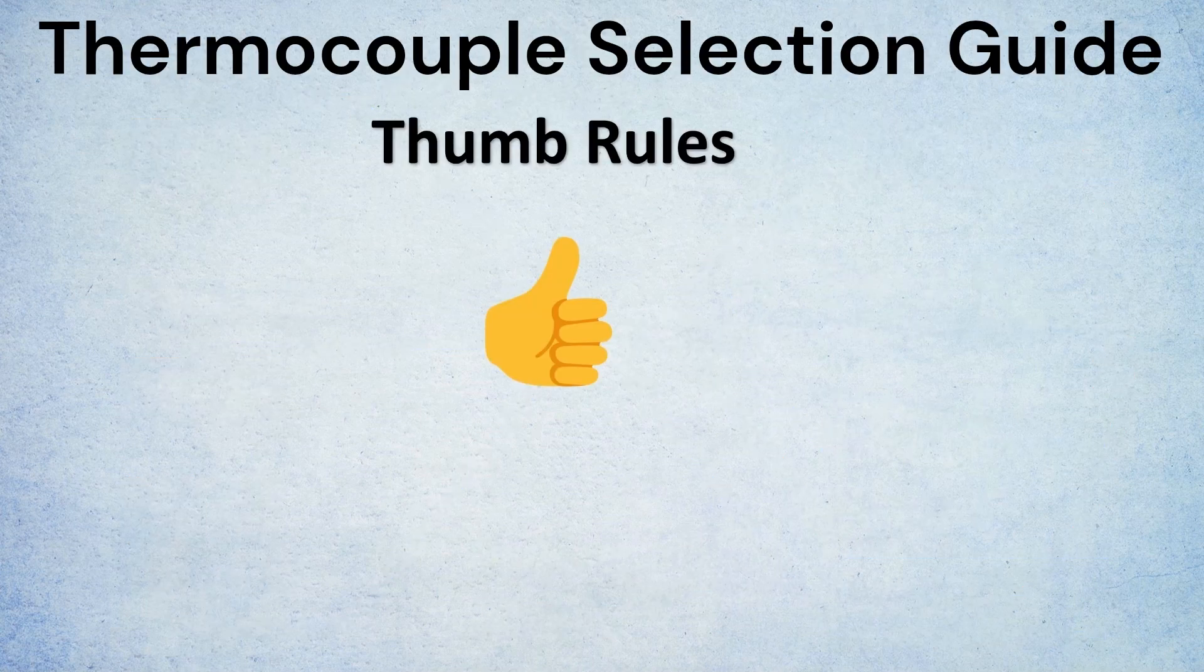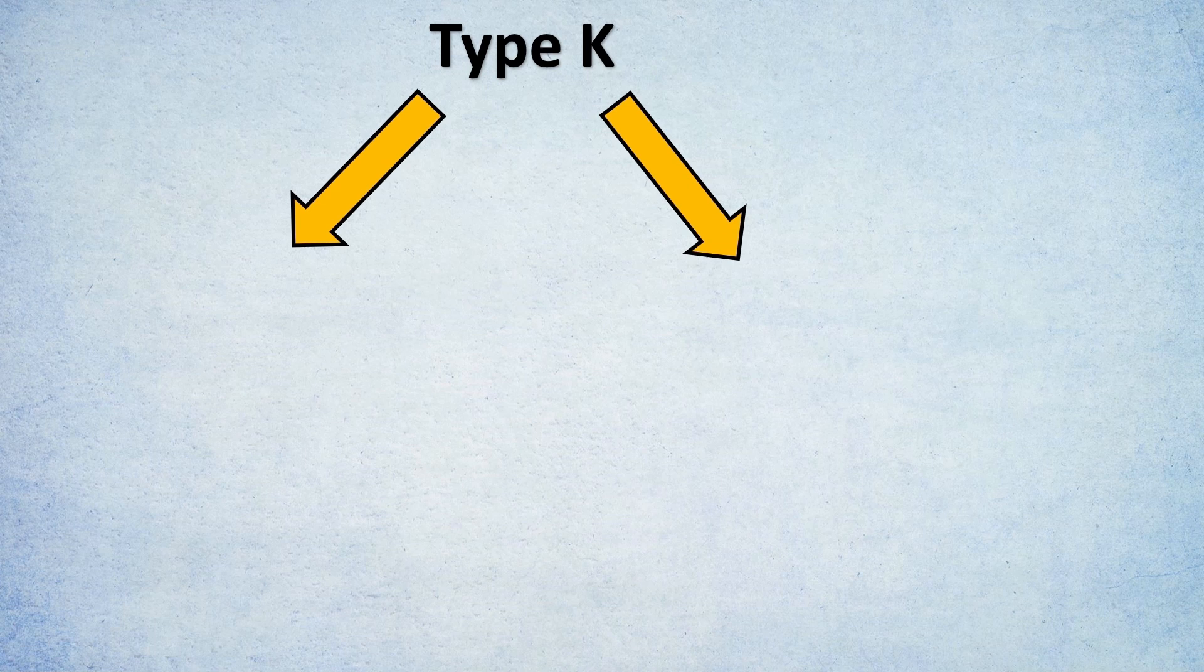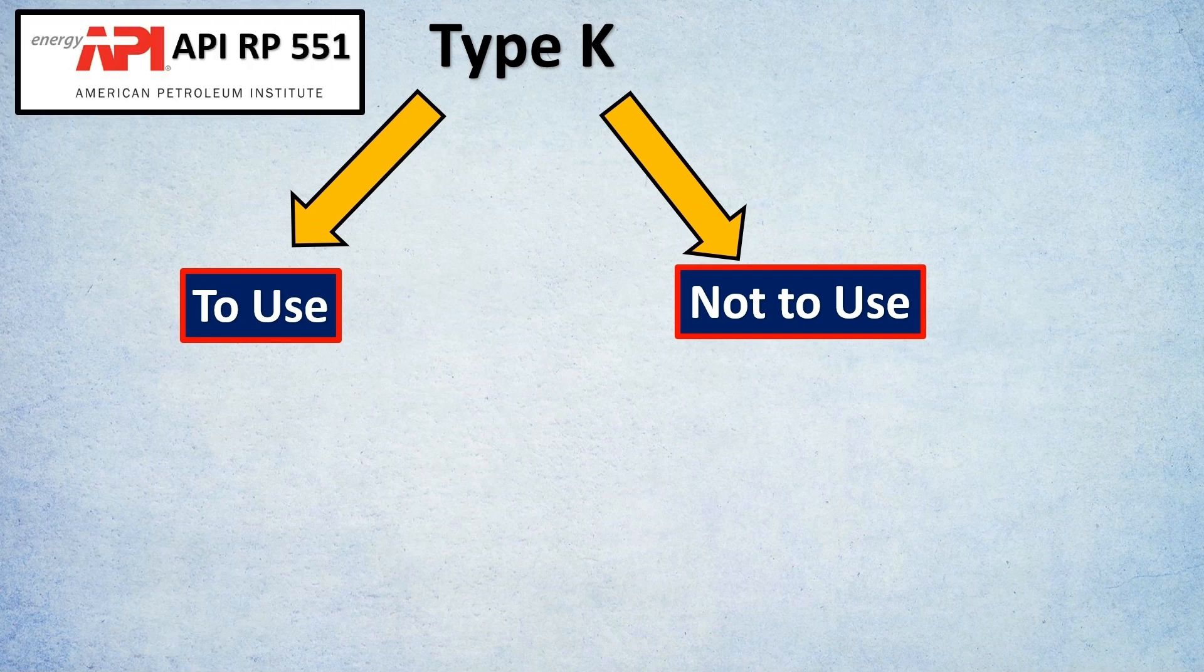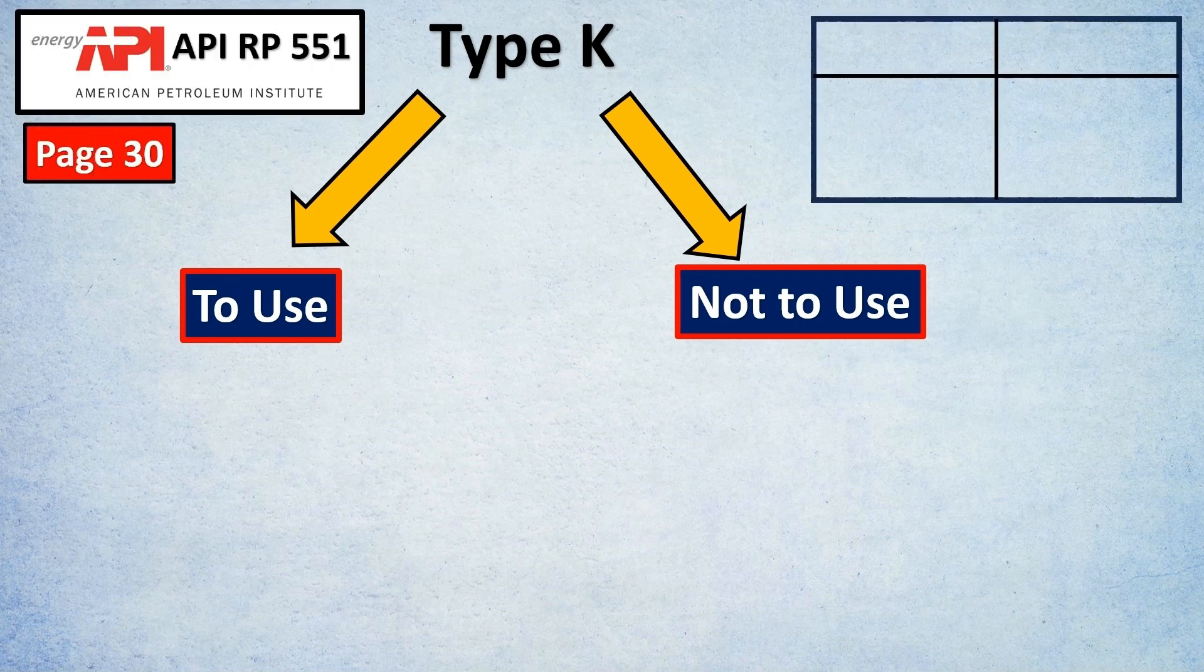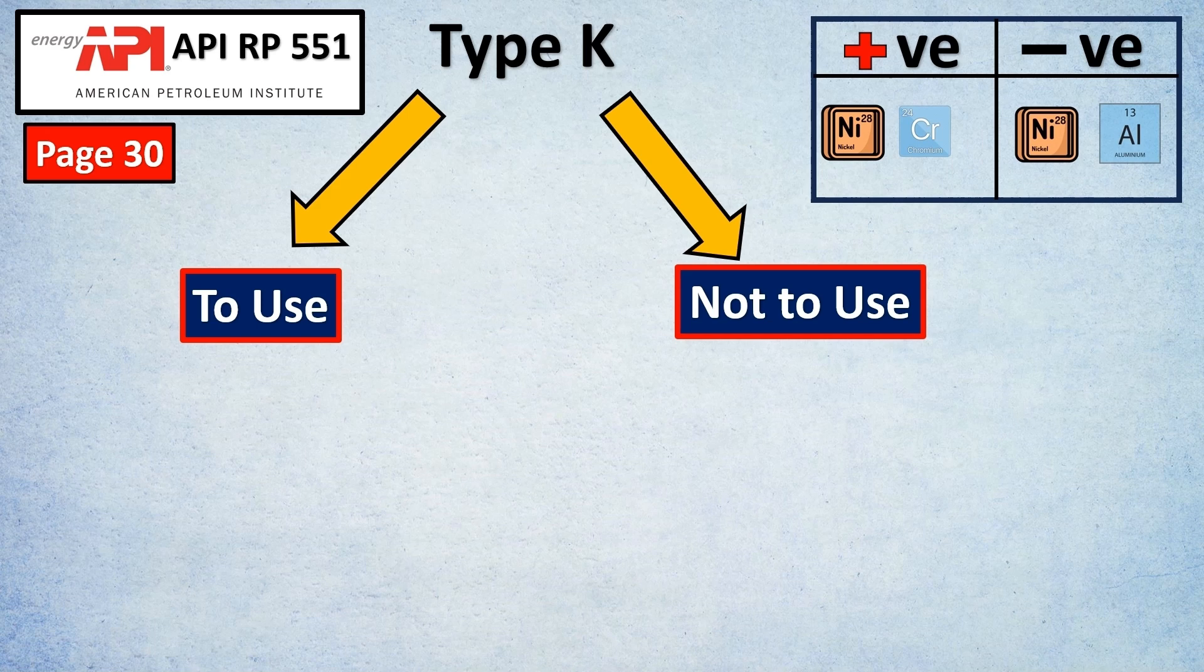Let's look at thumb rules for selecting which type of thermocouple to use. Type K thermocouples are the most widely used. We'll look at when to use and when not to use these as per API RP 551 page 30. Type K has a positive side made of nickel-chromium and the negative side made of nickel-aluminum.